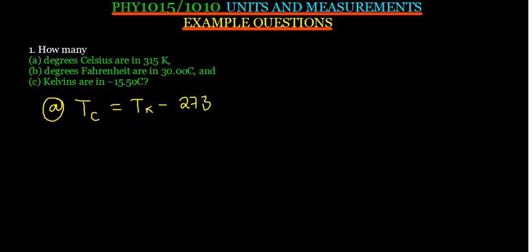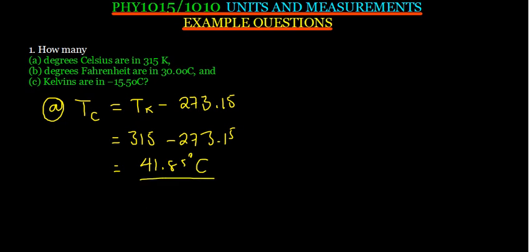If you want to be more specific, you can also say 273.15, depending on what they want you to use. So the temperature given here in Kelvin, that is 315 minus 273.15, is going to give us 41.85 degrees Celsius. That is how we convert.